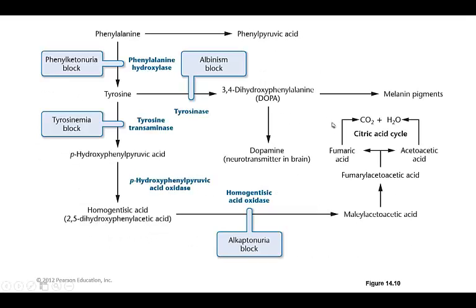Let's look at some of the different steps in this pathway. Here's phenylalanine. The block in phenylketonuria is at this enzyme — just one particular enzyme that gets mutated in these individuals. They do not have functioning phenylalanine hydroxylase, so they can't go from phenylalanine to tyrosine. They can make this other product that can build up and cause mental retardation at high levels.